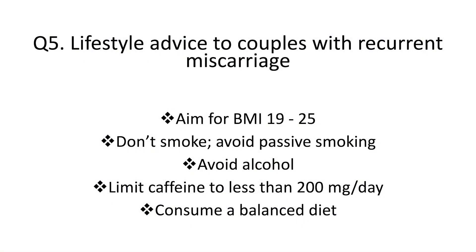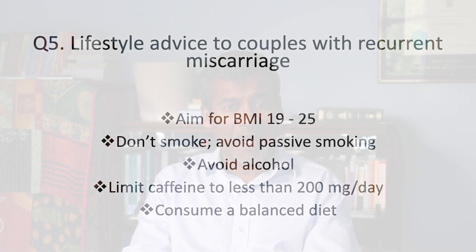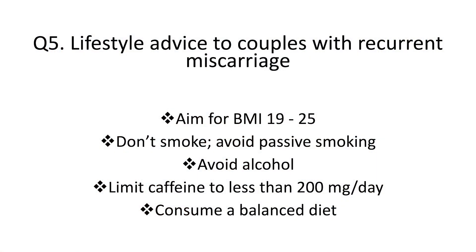Question 5: What lifestyle advice should you give to couples with recurrent miscarriage? There are five key lifestyle issues to address. First, achieve an optimal body mass index. Second, stop smoking — women should not be exposed to passive smoking either, as if the partner smokes, the mother smokes, and if the mother smokes, the baby smokes. Third, stop alcohol consumption. Fourth, limit caffeine intake to less than 200 milligrams per day. Fifth, consume a healthy, balanced diet, particularly enriched with fruits and vegetables.